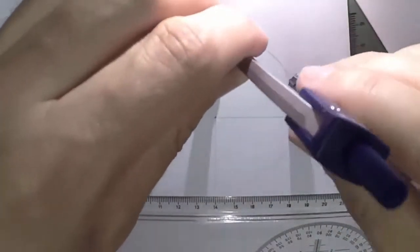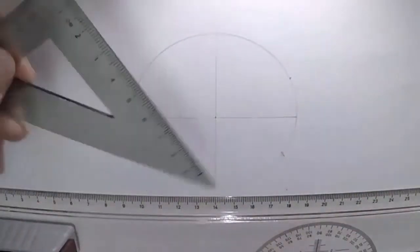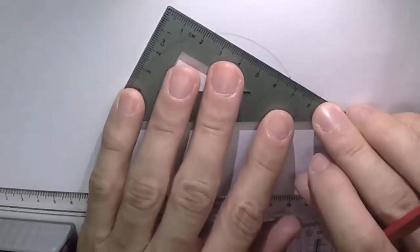And then I'm going to set my compass to 40mm again. And from the top point I'm going to mark where they hit on the circle to find the other points of the hexagon.